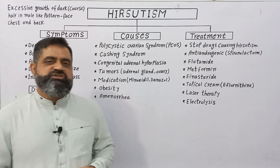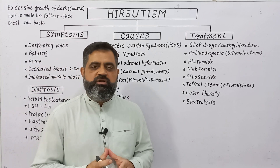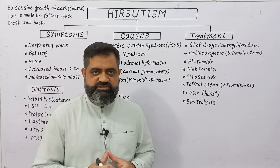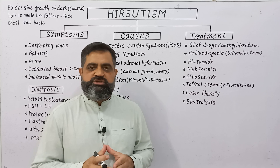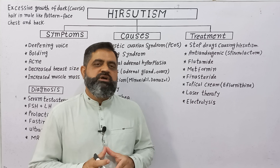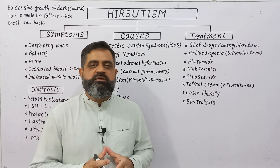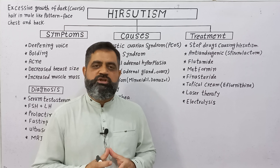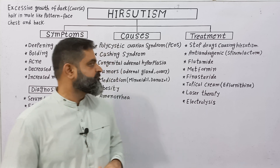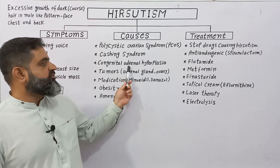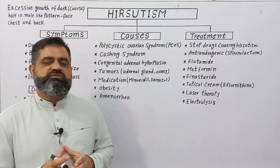Cushing syndrome is a condition in which the body has too much cortisol — a corticosteroid hormone. Excessive use of corticosteroids through medication can also lead to Cushing disease. This condition also leads towards hirsutism.